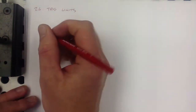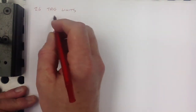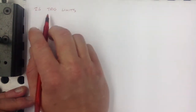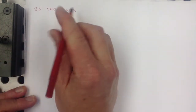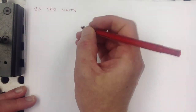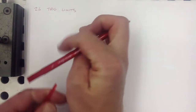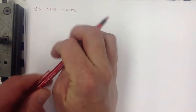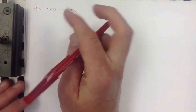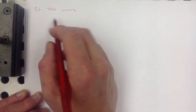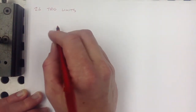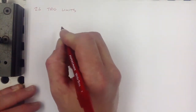This video contains the notes for section 2.6, limits involving trigonometric functions. There are two important results that yield a lot of other interesting consequences.